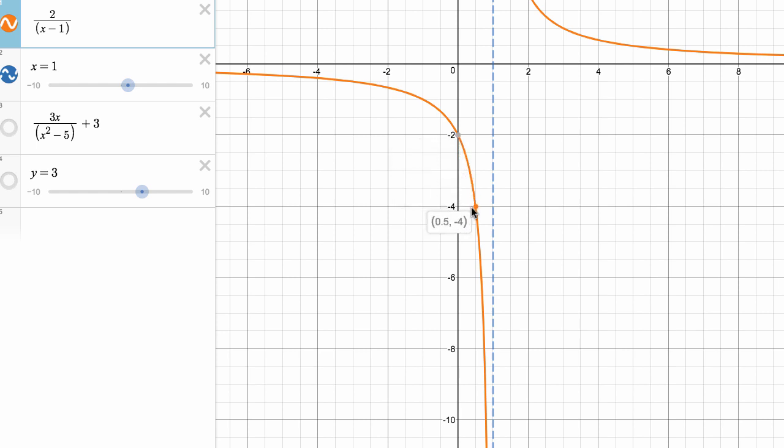When x is equal to 0.5, f of x is equal to negative four. And then it just gets more and more negative the closer we get to one from the left.